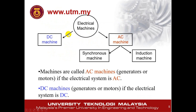As mentioned before, there are 3 types of machines: DC machine, synchronous machine, and induction machine. The DC machine produces DC current — direct current. The synchronous machine and induction machine produce AC current. You have to differentiate between DC machines and AC machines.